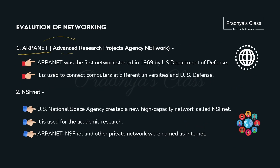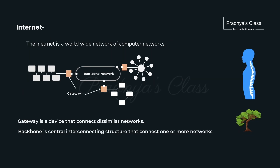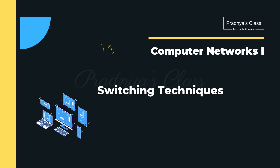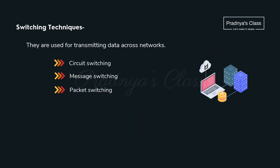ARPANET was started in 1969 by the US Department of Defense. Internet means interconnected network — it is a network of networks. After types of network, we proceed to one more important topic — switching techniques. Here are the ways in which we transmit data over the network: circuit switching, message switching, and packet switching.